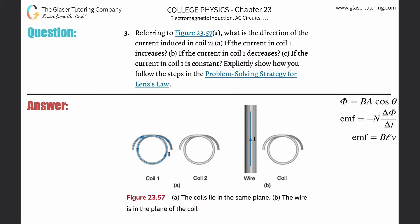Number three: referring to figure 23.57, letter A — what is the direction of the current induced in coil number two, if the current in coil one increases?